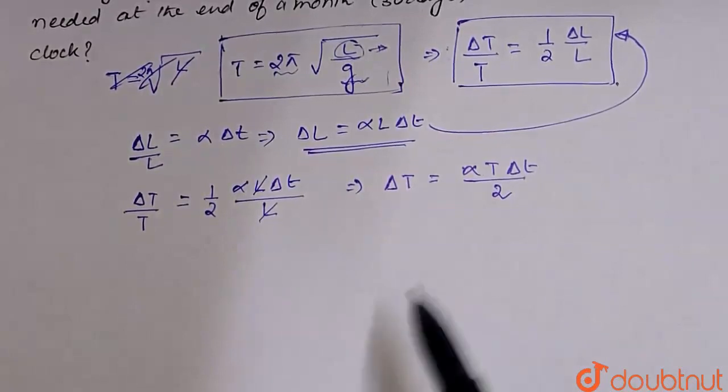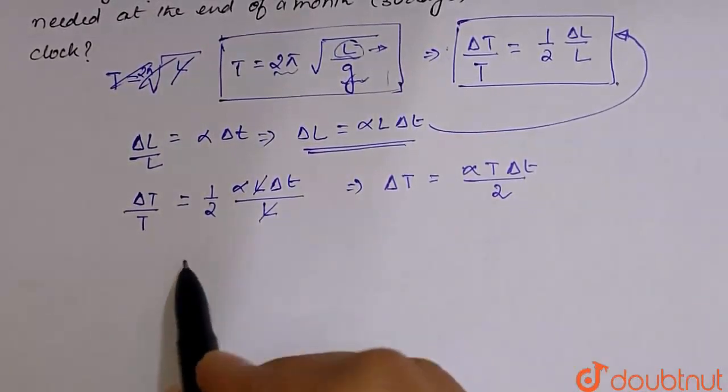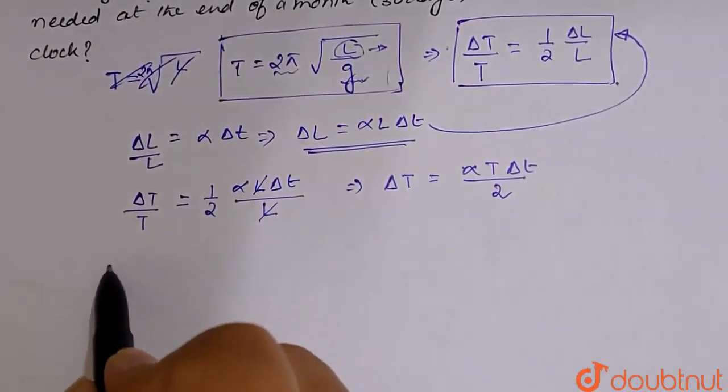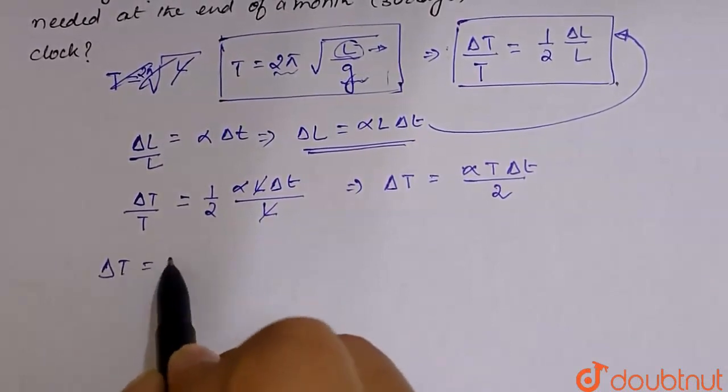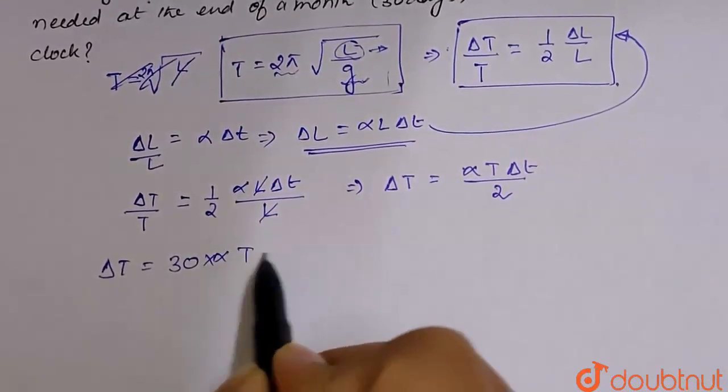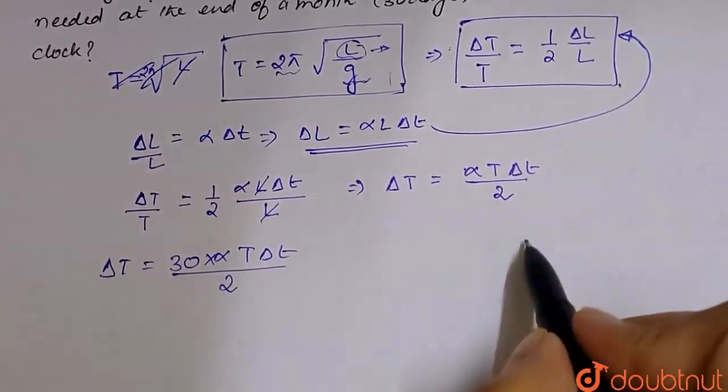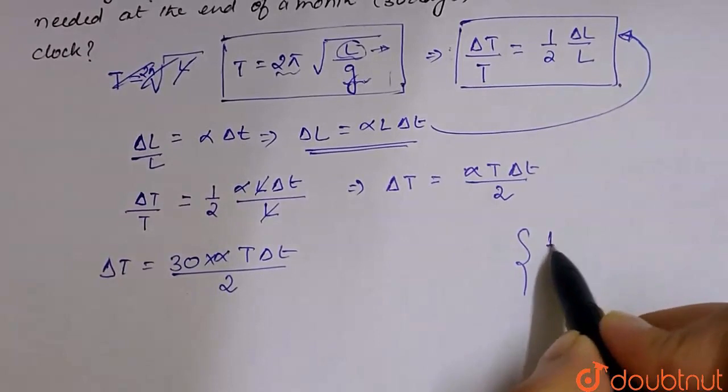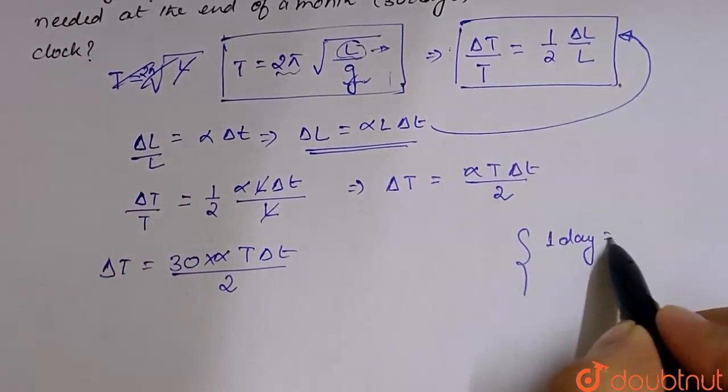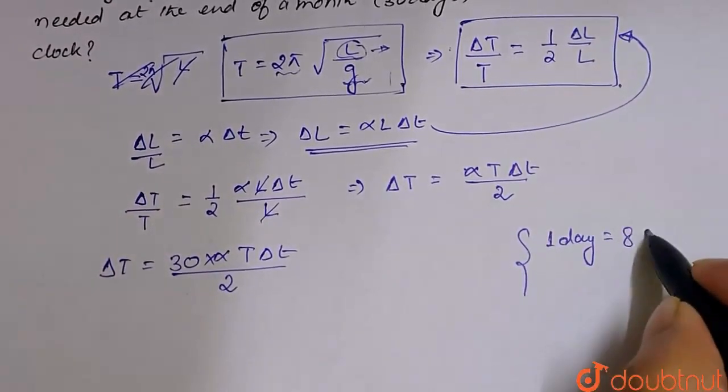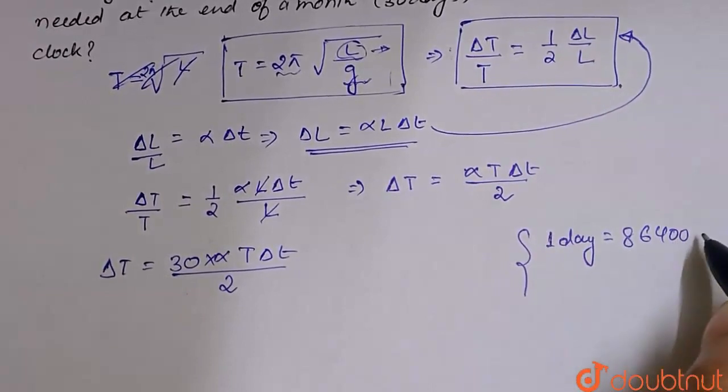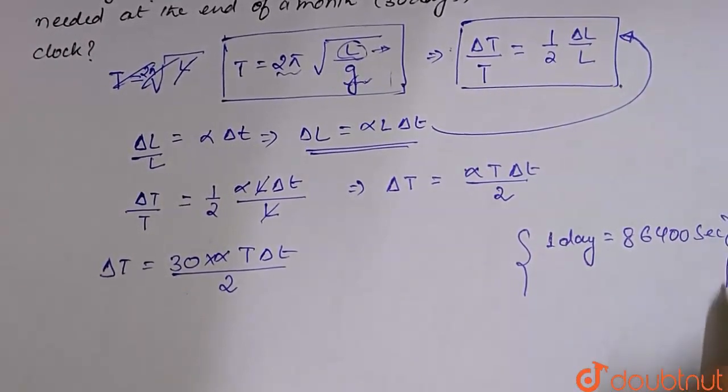Now one month time period correction, how much? So 1 month, that is 30 days, alpha T delta T divided by 2. Now, 1 day is 86400 seconds.